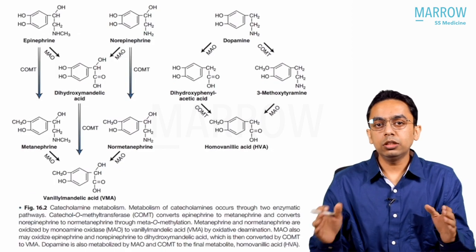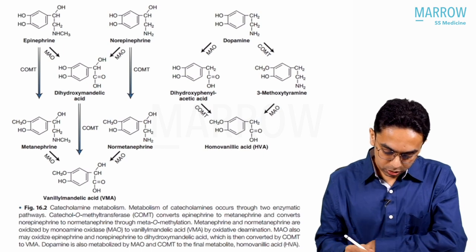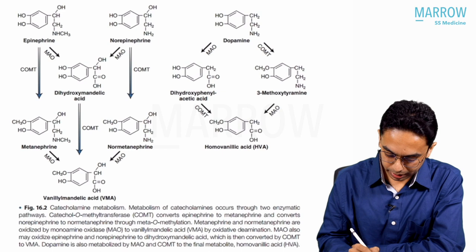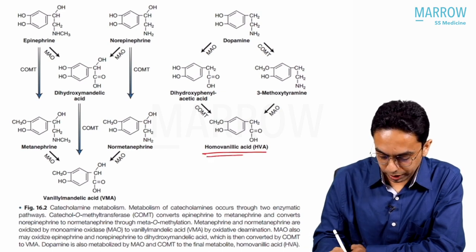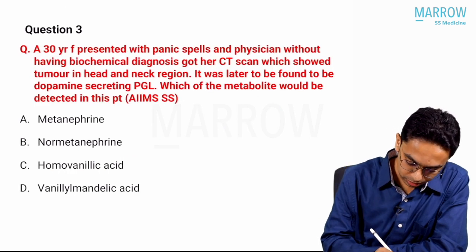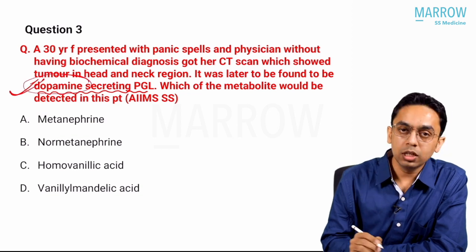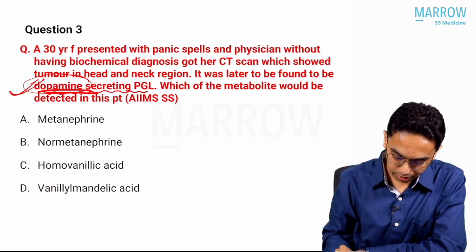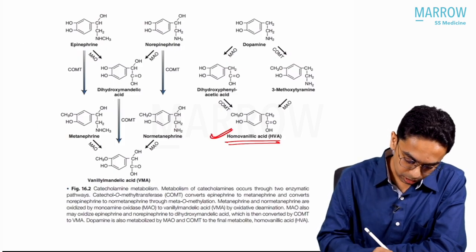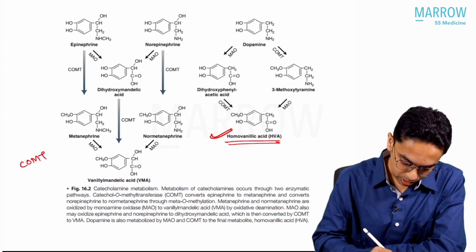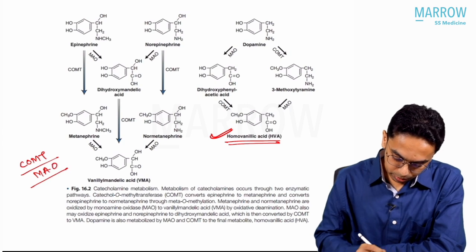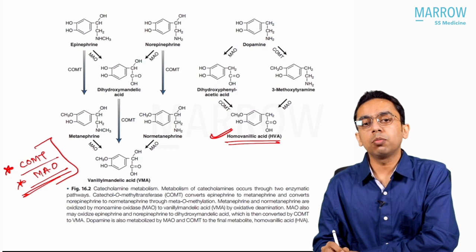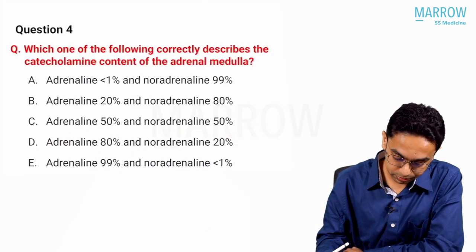Usually when you see paraganglioma you jump to normetanephrine, but that's not the answer here. In catecholamine metabolism — which occurs in the tumor itself — from epinephrine we get metanephrine, then VMA; from dopamine we get homovanillic acid (HVA). Since the question specifies a dopamine-secreting paraganglioma, the answer is HVA. The enzymes involved are COMT (catechol-O-methyltransferase) and MAO (monoamine oxidase).